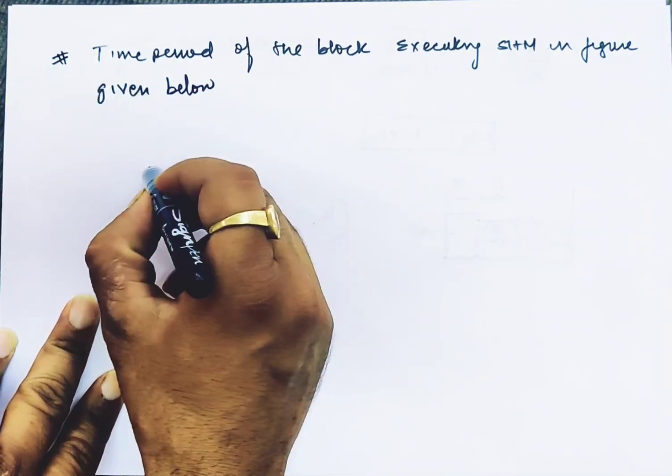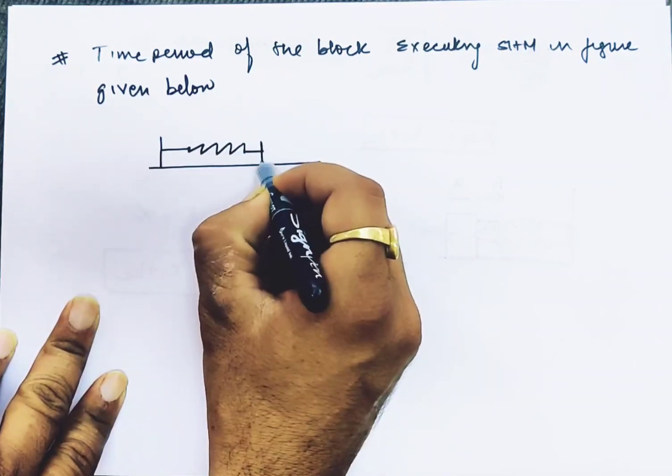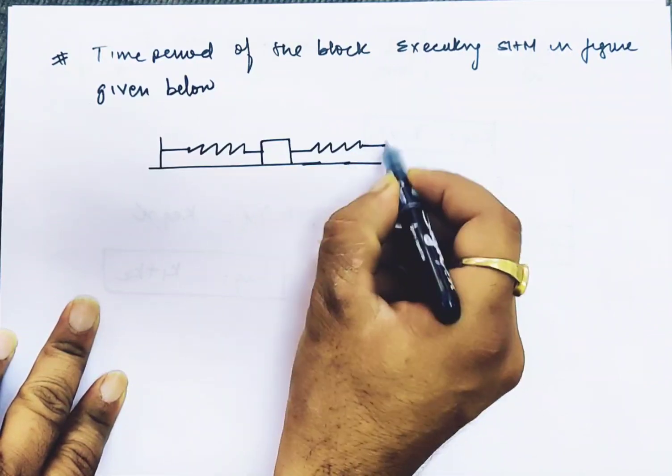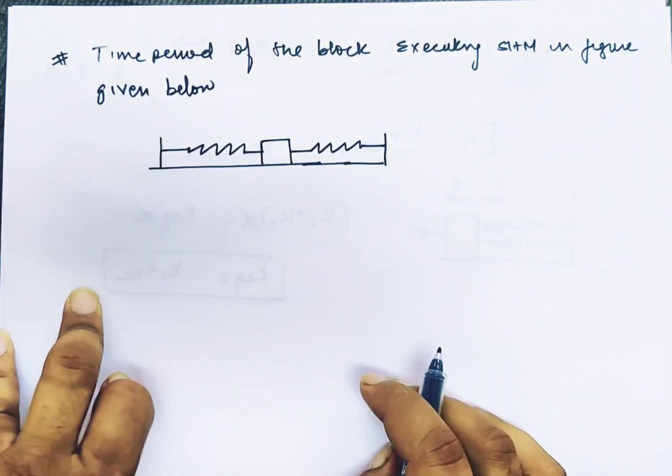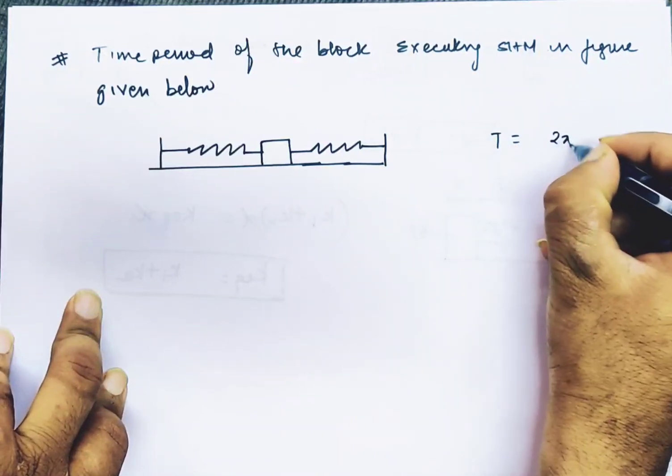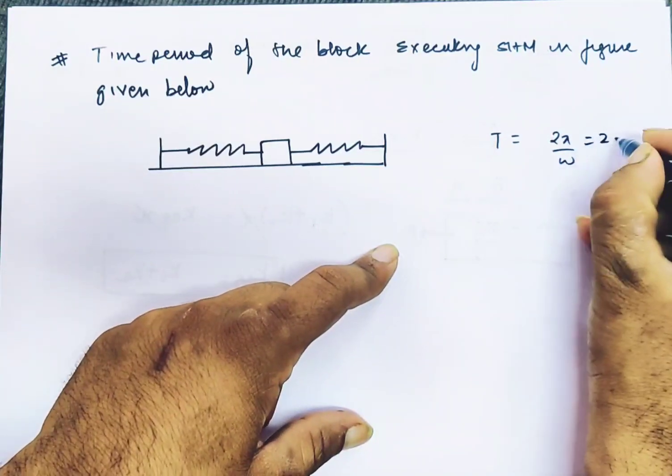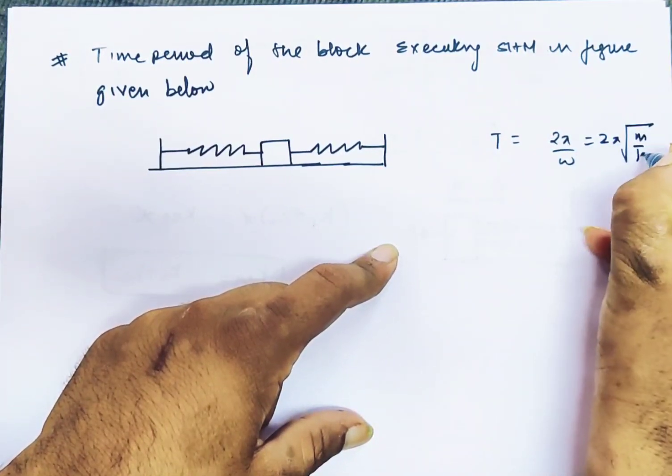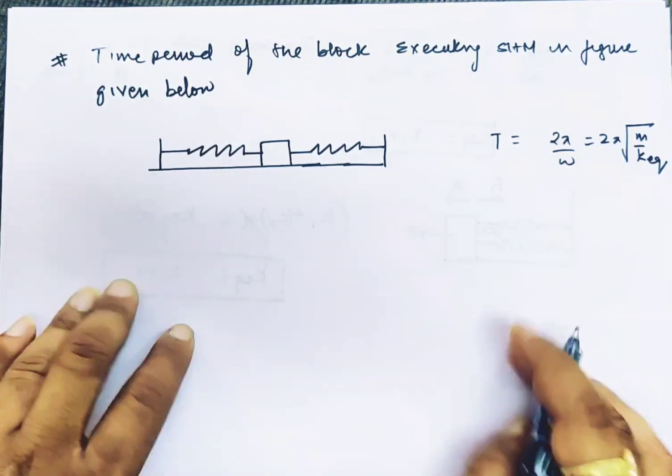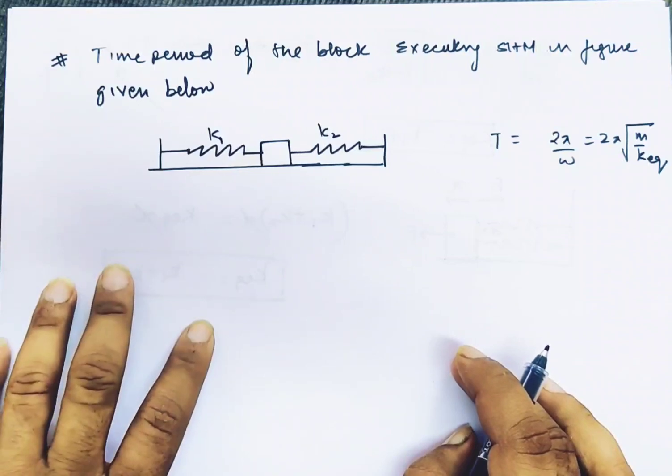The time period is T = 2π/ω = 2π√(m/k_equivalent), where k_equivalent depends on whether k1 and k2 are connected in parallel or series.